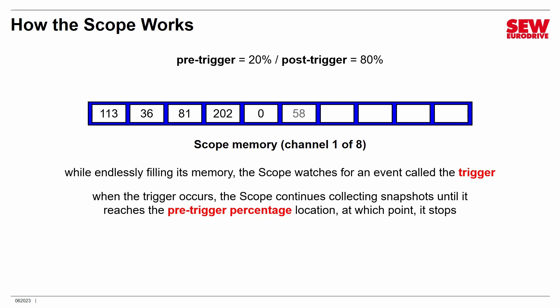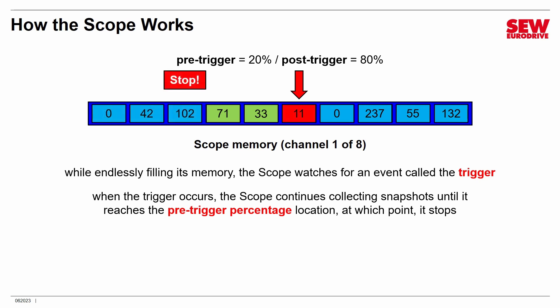For example, if the pre-trigger is set to 20% and the post-trigger to 80%, the scope preserves 20% of the memory before the trigger and 80% after. The scope is collecting data, going around in a circle, watching for the trigger — and when the trigger arrives, it marks that pre-trigger data for preservation and continues collecting post-trigger data until the buffer is full. At that point, all the information has been collected, and the trigger event is what caused all of this to happen.